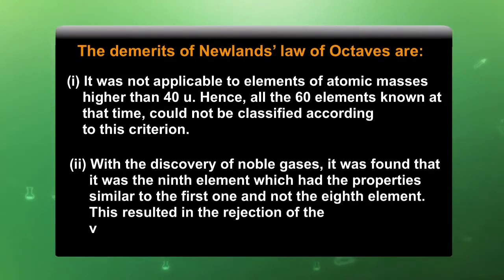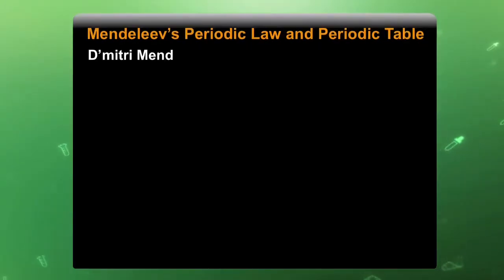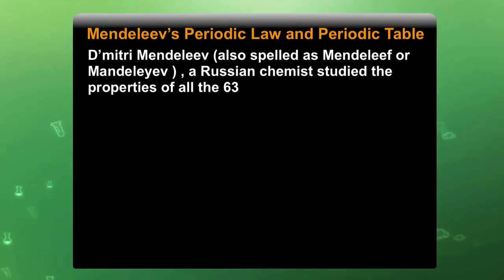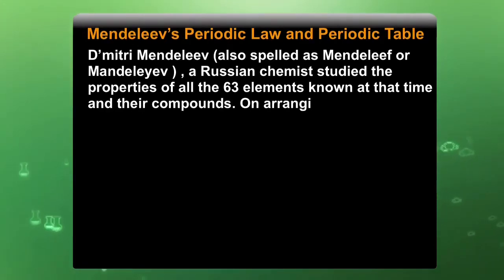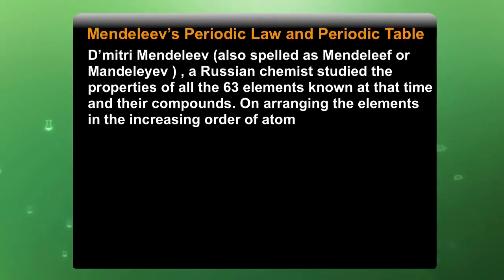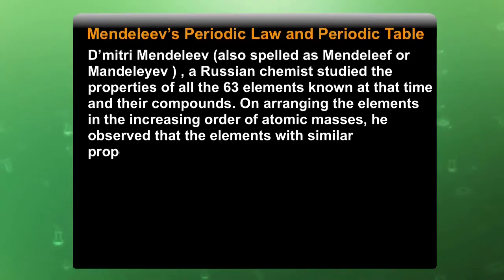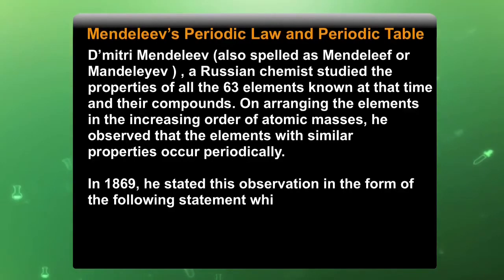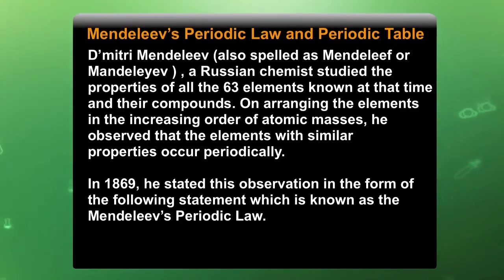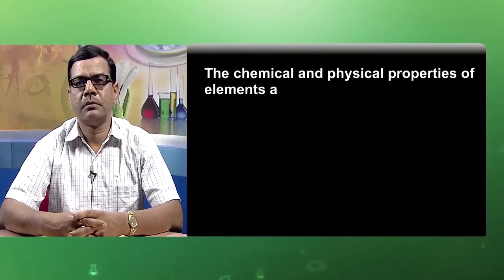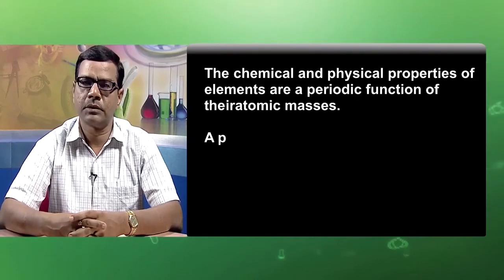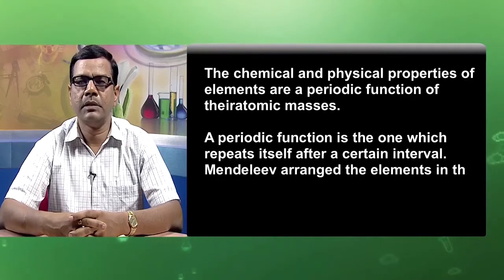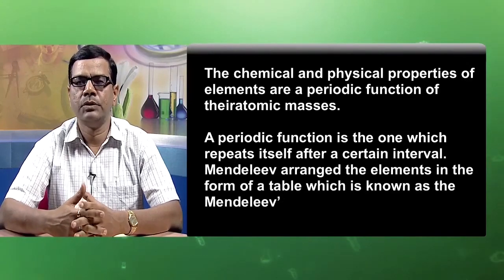Dmitri Mendeleev, a Russian chemist, studied the properties of all the 63 elements known at that time and their compounds. On arranging the elements in the increasing order of atomic masses, he observed that elements with similar properties occur periodically. In 1869, he stated this observation in the form of Mendeleev's periodic law: the chemical and physical properties of elements are a periodic function of their atomic masses. The periodic function is one which repeats itself after certain intervals. Mendeleev arranged the elements in the form of a table known as Mendeleev's periodic table.